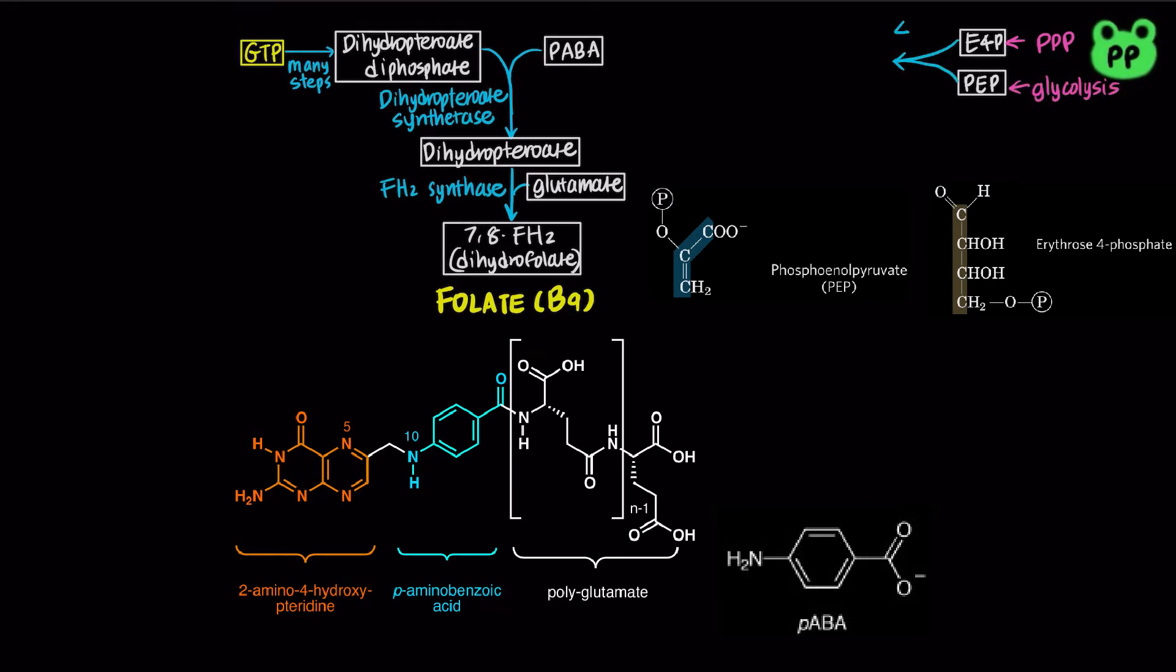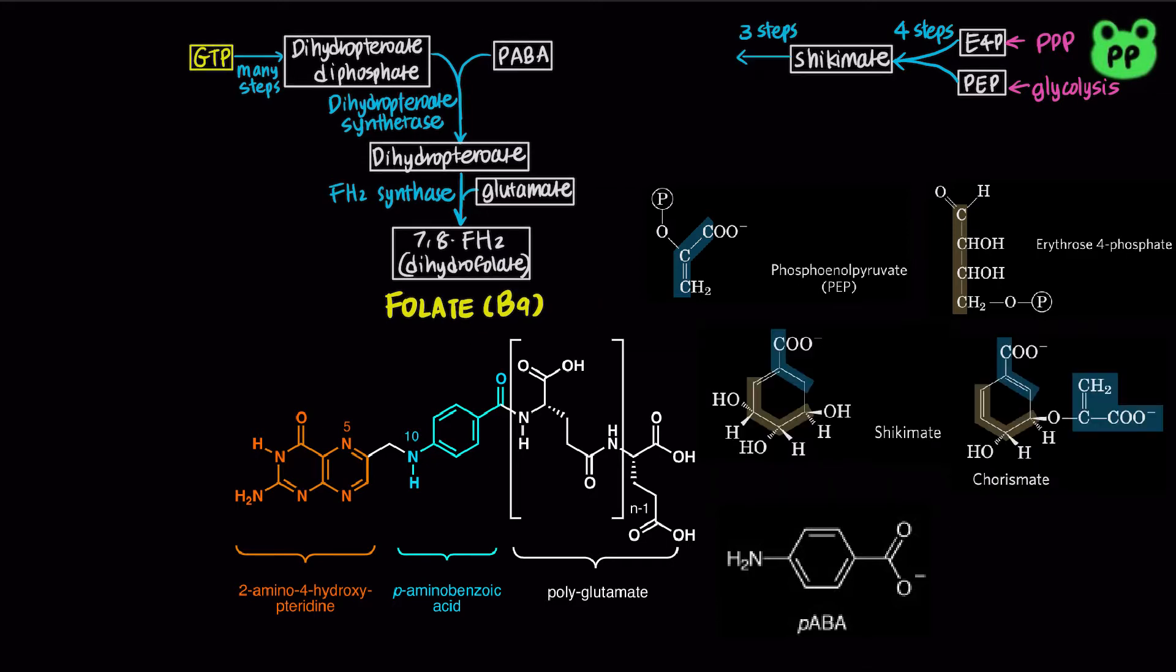Erythrose-4-phosphate and phosphoenolpyruvate combine to form intermediates shikimate and chorismate, which also serve as precursors to aromatic amino acid biosynthesis, which I've covered in my previous video on amino acid metabolism. Chorismate is converted to PABA in several steps.